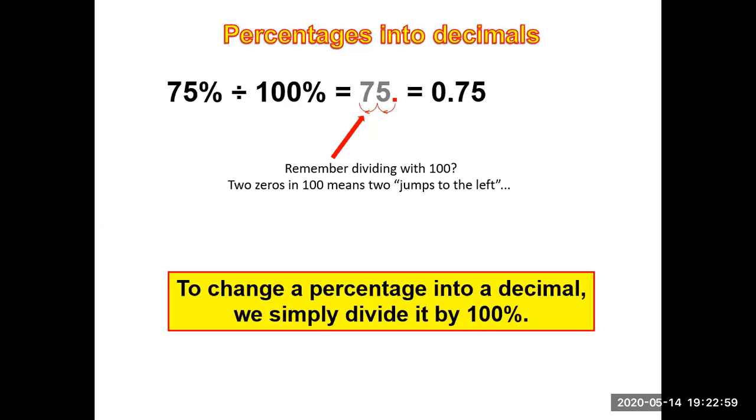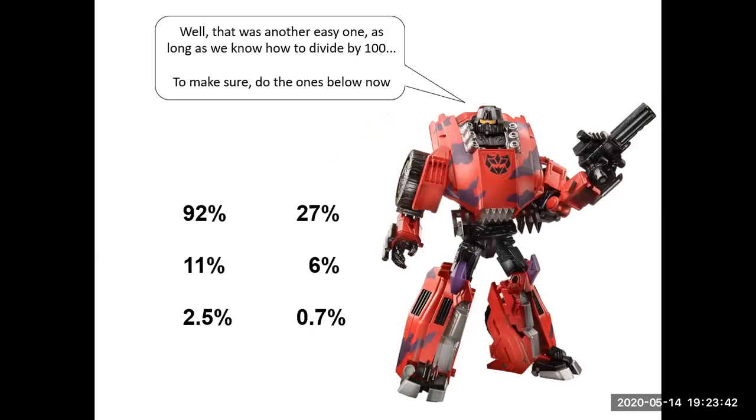Percentages into decimals: 75% divided by 100, and you go right back. Remember, dividing with 100 - two zeros in 100 means two jumps to the left. To change a percentage into a decimal, we simply divide it by 100%. The value still remains the same, but you're just changing it.